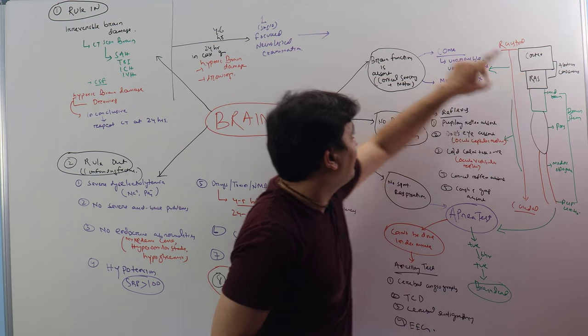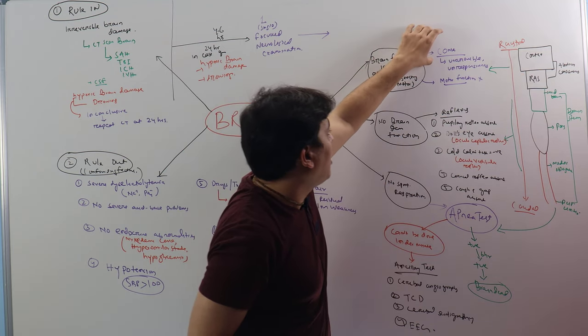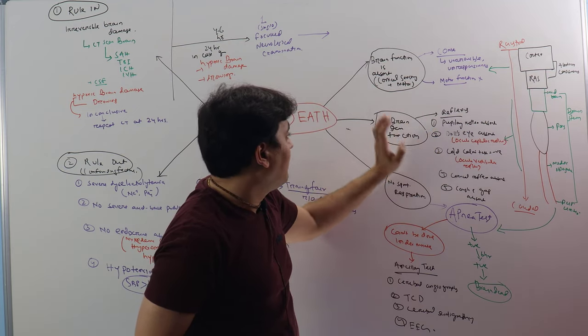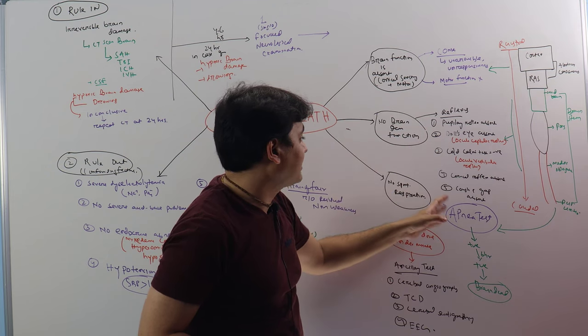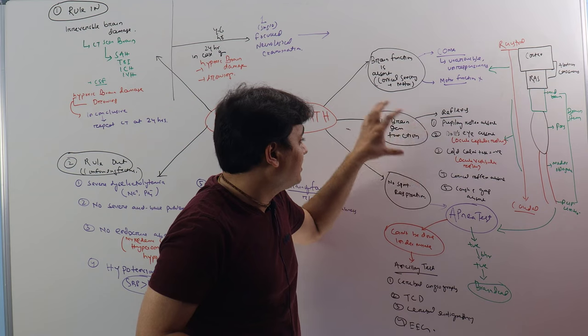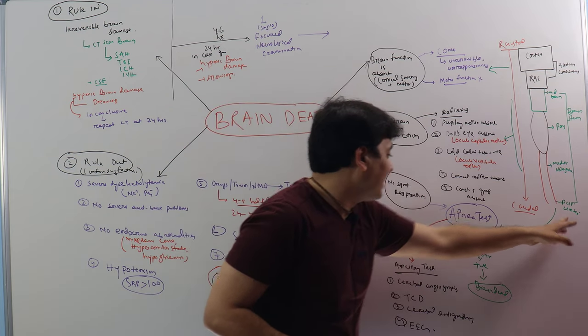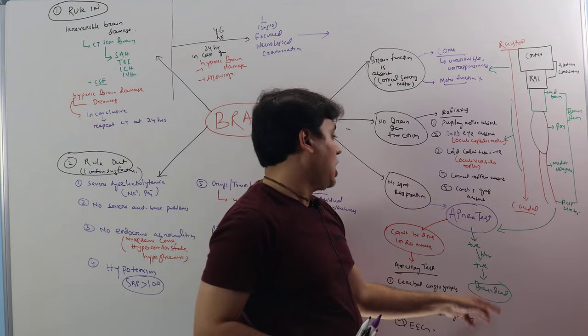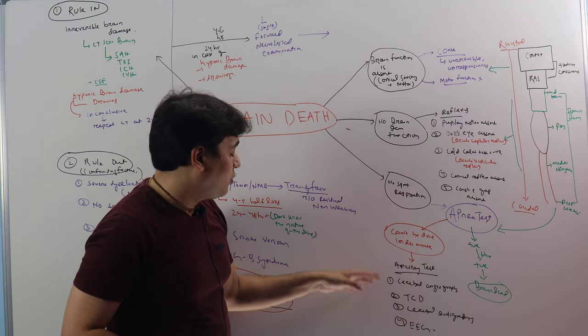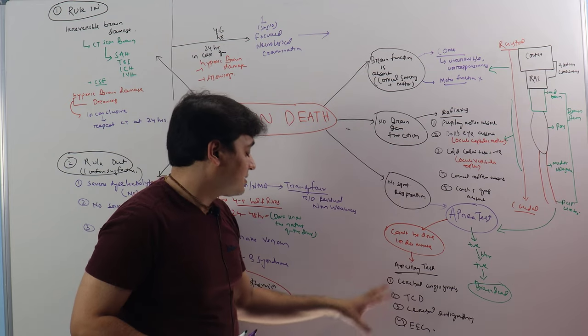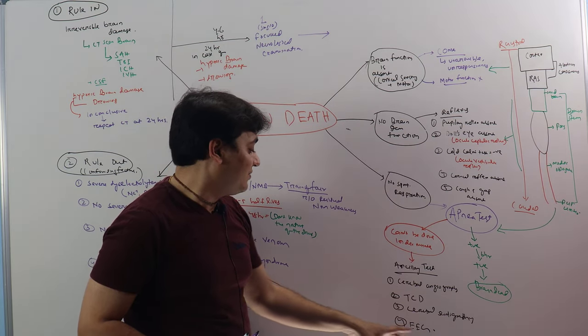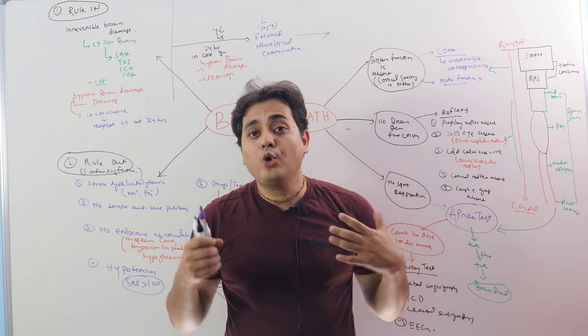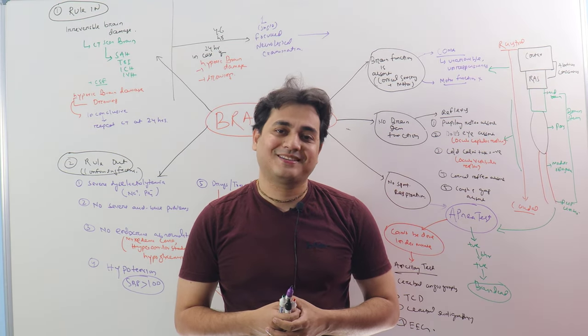First, we will prove that the cortex and reticular activating system are not working by proving that the patient is in coma and there is no motor activity. Then we have to prove that there is no brainstem function by looking at the reflexes: pupillary reflex, doll's eye, cold calorie test, corneal reflex, and cough and gag reflexes. Once you have done with these things, the ultimate test will be the respiratory center. If it is not working by doing apnea test, if it is positive twice at six-hour intervals, then the patient is brain dead. However, if the apnea test is indeterminate or cannot be done, we have to do ancillary tests. There are four types: cerebral angiography, transcranial Doppler, cerebral scintigraphy, and electroencephalogram. In this way, we approach how to determine brain death of a patient. Thank you very much.